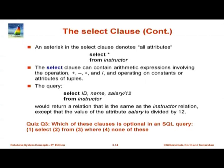By default SQL does not remove duplicates. If you want it to remove duplicates you have to say SELECT DISTINCT — for example SELECT DISTINCT department_name FROM instructor. The keyword ALL specifies that duplicates should not be removed and this is the default. SELECT star FROM instructor says select all attributes — star means all attributes. Many databases support variants like SELECT r.* which says select all attributes from table r. You can also have expressions — for example SELECT id, name, salary/12 FROM instructor.